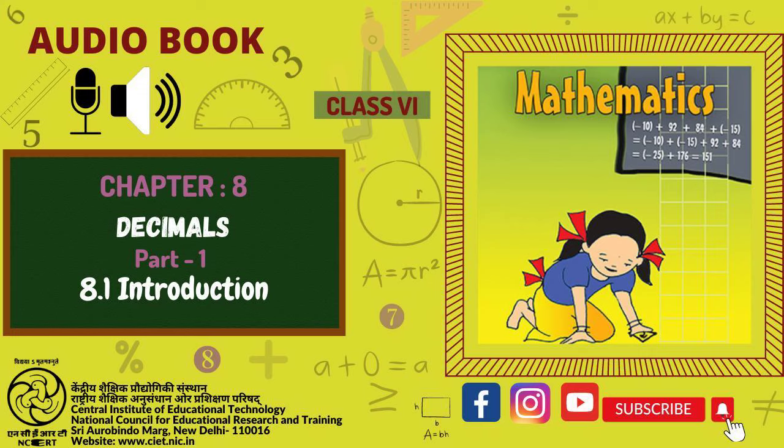B. In 1 upon 2 the denominator is 2. For writing in decimal notation the denominator should be 10. We already know how to make an equivalent fraction. So 1 upon 2 is equal to 1 multiplied by 5 upon 2 multiplied by 5 which is equal to 5 upon 10 which is equal to 0.5. Therefore 1 upon 2 is 0.5 in decimal notation. Try these: Write 3 upon 2, 4 upon 5, 8 upon 5 in decimal notation.